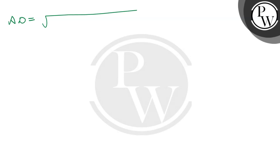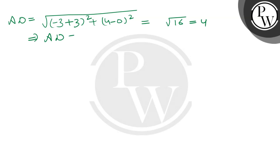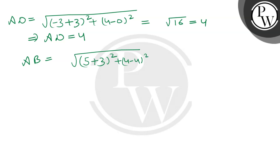Using the distance formula to find AD and AB: AD = √((-3 - (-3))² + (4 - 0)²) = √(0 + 16) = 4. And AB = √((5 - (-3))² + (4 - 4)²) = √(64 + 0) = 8. So AD = 4 and AB = 8.